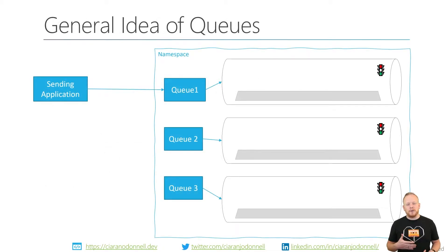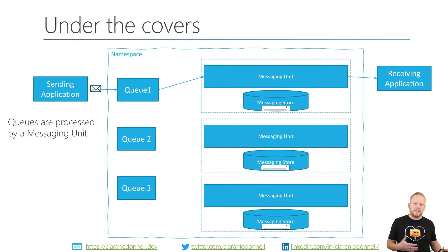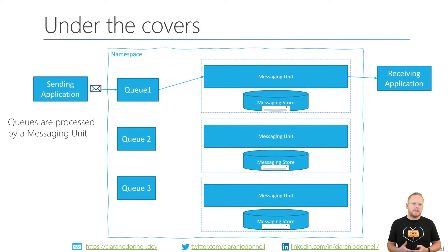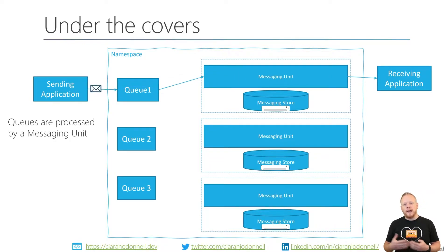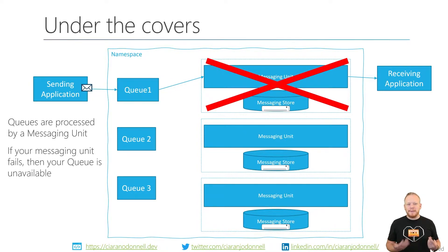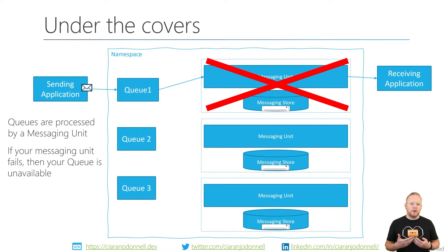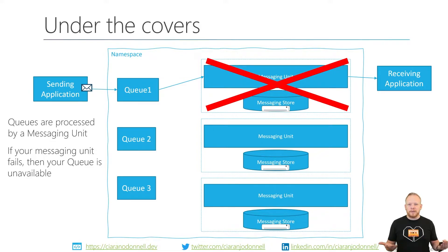Remember our general idea of queues — I've used the analogy of a queue being effectively like a road, and as we send messages in, they just queue up behind each other. Under the covers, when we create a queue on Azure Service Bus, there's a messaging unit, which is like some processing power and a messaging store, and that queue gets allocated to a specific messaging unit. When that messaging unit fails — because software and hardware can be expected to fail — your entire queue becomes unavailable. You're unable to send to or receive from the queue, or the topic and subscription.